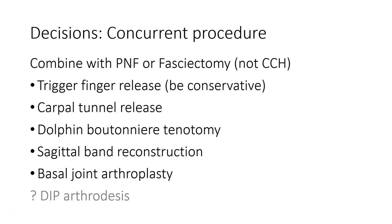The stealth diagnosis in someone with a severe metacarpophalangeal joint contracture is a sagittal band rupture. It's difficult to diagnose in somebody who has a fixed MP contracture, but one clue is rotation of the finger at the MP level not otherwise explained by cords in the palm. You can address this with mechanical procedures for Dupuytren, but not with collagenase.